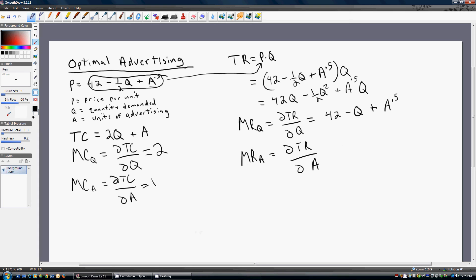So we take the partial derivative of our total revenue function, this right here, this time with respect to A. And we're going to get 0.5 A to the 0.5 power minus 1 times Q. And I'll go ahead and simplify that.